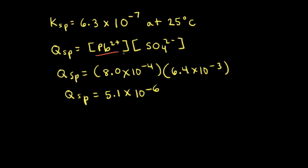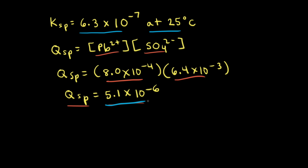Now that we know the concentrations of lead two plus ions and sulfate ions after the two solutions have been mixed, we can plug those concentrations into our Qsp expression and solve for Qsp. At this moment in time, Qsp is equal to 5.1 times 10 to the negative sixth. At 25 degrees Celsius, the Ksp value for lead two sulfate is 6.3 times 10 to the negative seventh. Therefore, Qsp is greater than Ksp. Since Qsp is greater than Ksp, we've exceeded the limit of what can dissolve, the solution is oversaturated, and yes — a precipitate of lead two sulfate will form until Qsp equals Ksp.